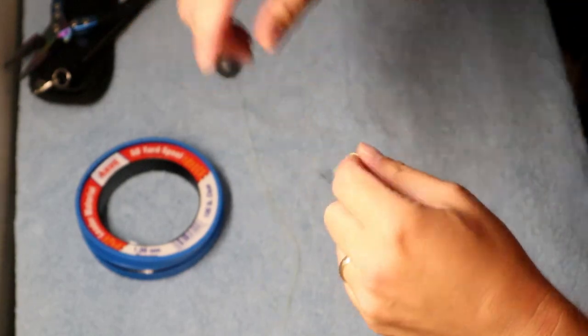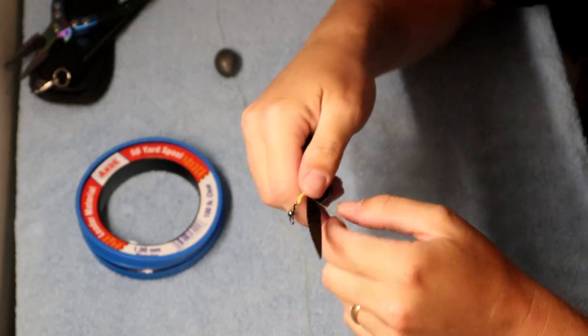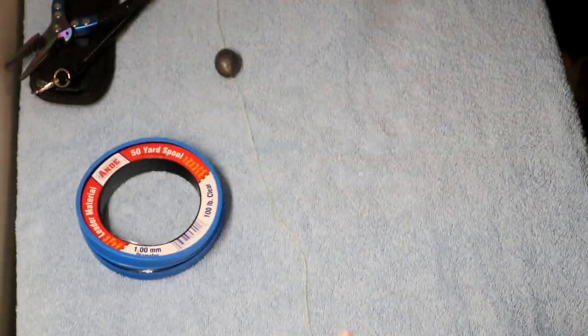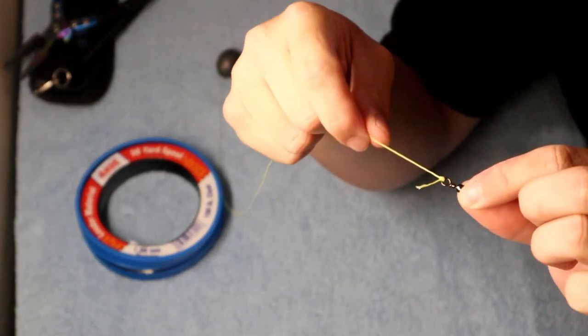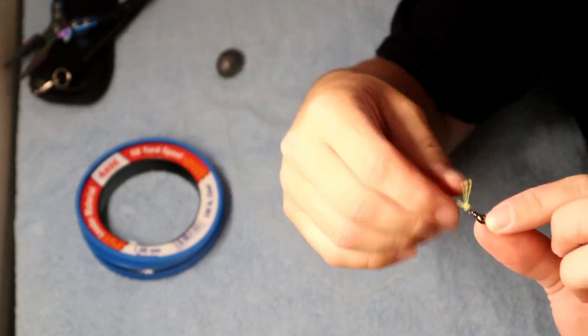Then you take your tag end and you just cut that. You can use your pliers if they have the little blade on there to cut it. I usually just do it with a knife because it's a lot easier. Now normally when I'm fishing I'm not going to leave that much tag in; I'll cut it back a little bit more. But that's fine because the fish are probably never even going to see that anyway.